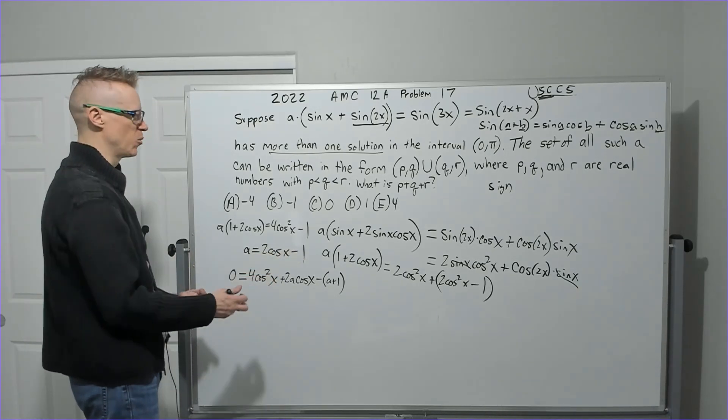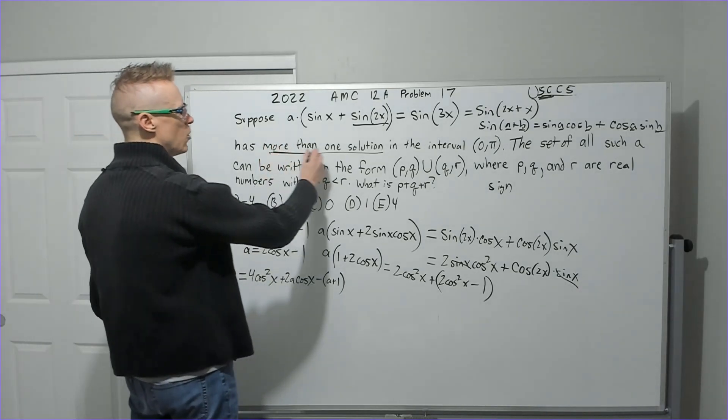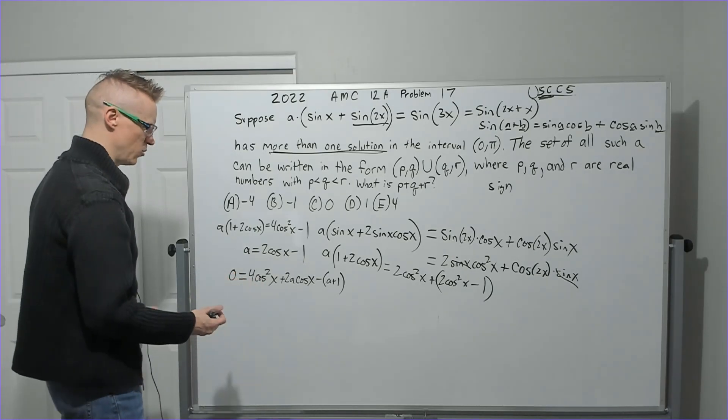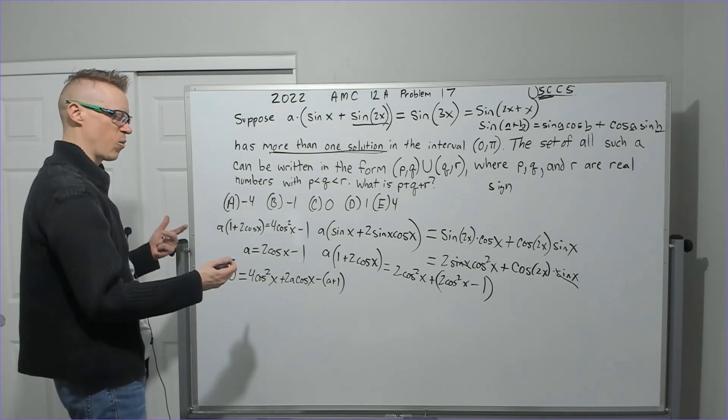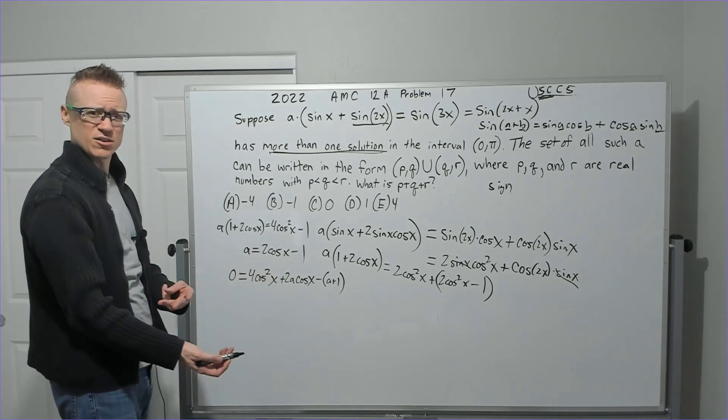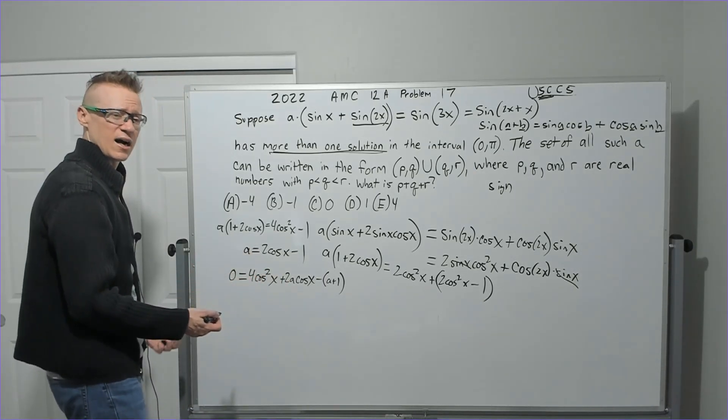We don't quite know if it's going to work, but let's go back and read it again. More than one solution. So I'm going to need this to have more than one solution. Maybe I want the discriminant, and the discriminant could be greater than zero, which means there's two real solutions.